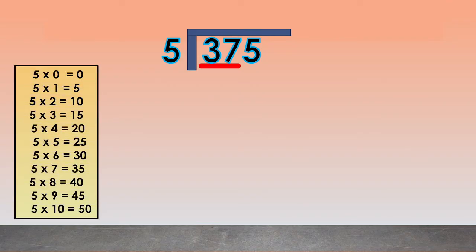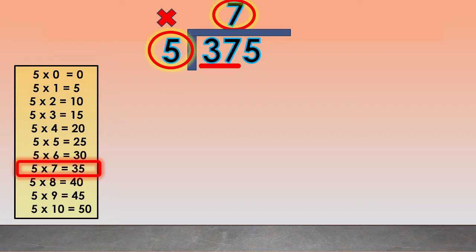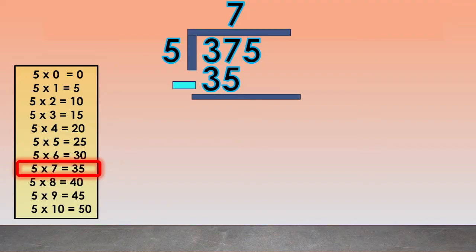Now, how many 5s will it take to reach 37 without going over? We will use the multiplication table of 5 and take the number closest without going over. We will use 5 times 7 equals 35. We write the 7 above the 7. Now multiply 5 times 7 equals 35 and write 35 below the 37. Subtract 37 minus 35 equals 2. Now bring down the digit 5, so it becomes 25.